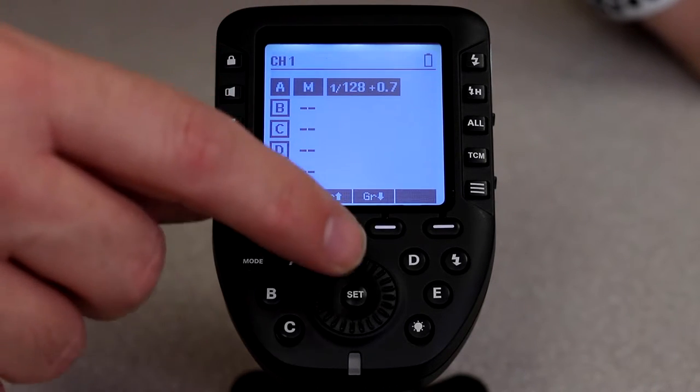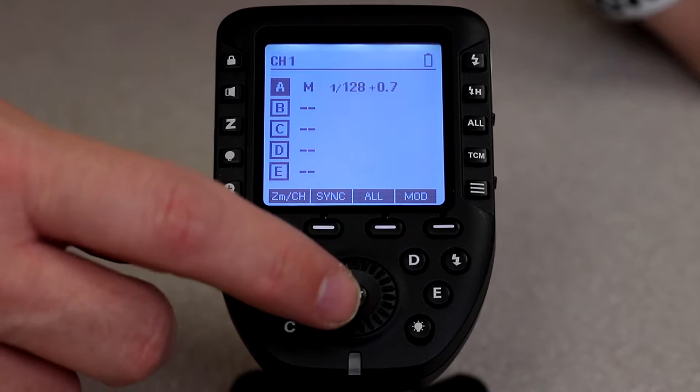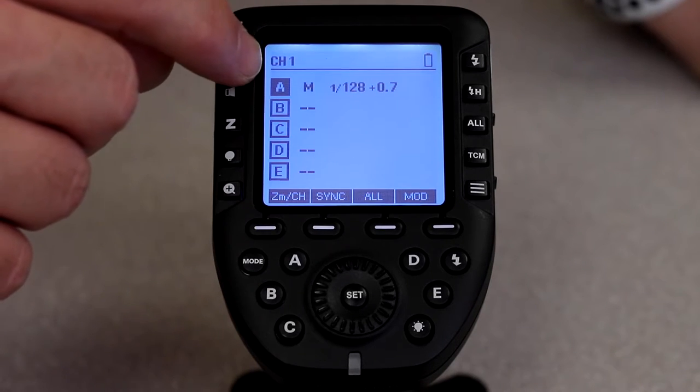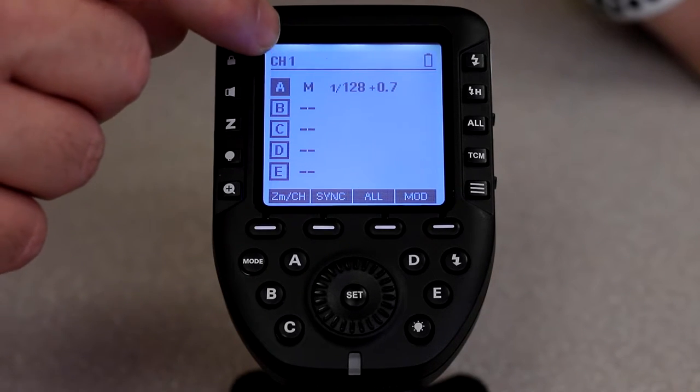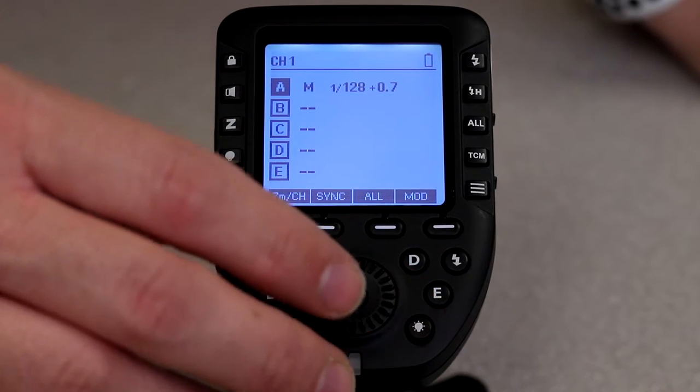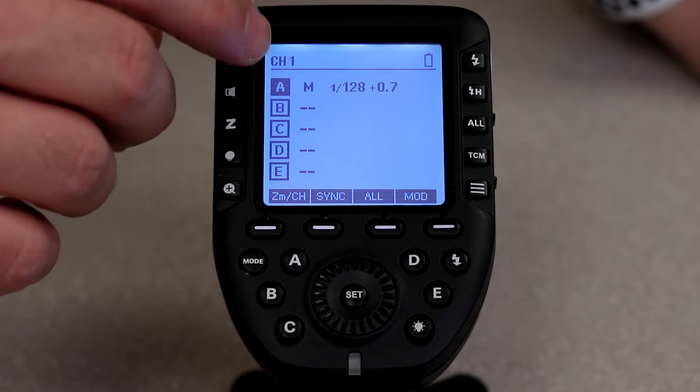Let's say that you have your flash on group B, channel 6. I'm going to come in here and I see right now A is active and it's on channel 1, well neither one of those things help me obviously. So what I want to do is I want to get it off of group A and I want to get it onto channel 6.